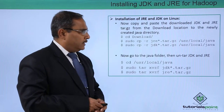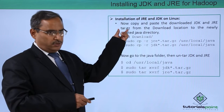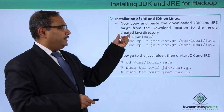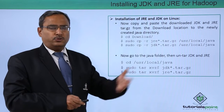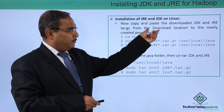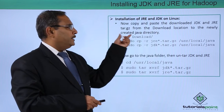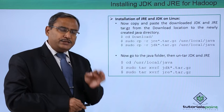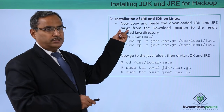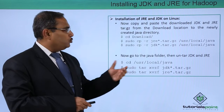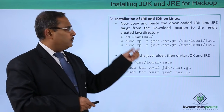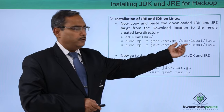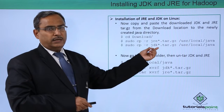Now copy and paste the downloaded JDK and JRE tar.gz files from the download location — that is, the downloads folder — to the newly created java directory. The default folder will be downloads, but you can also download to another folder. From that folder to the newly created java directory, these files are to be transferred. Use: cd Downloads, then sudo cp -r [filename] [destination folder], and similarly for JDK.